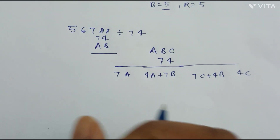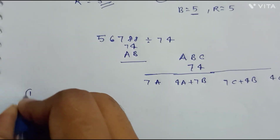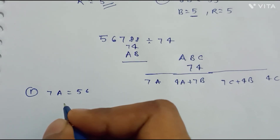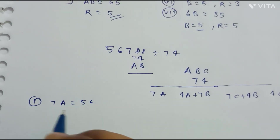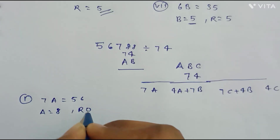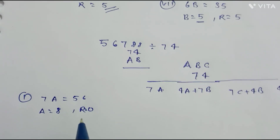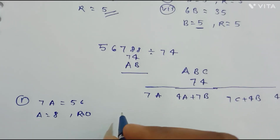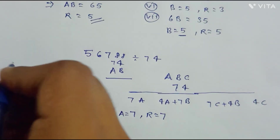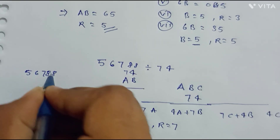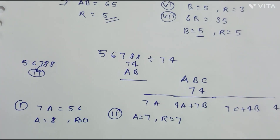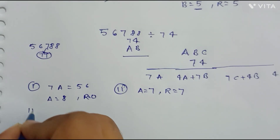Now we equate this with the given number 56788 and find the values of a, b, and c. Our first step is to write 7a equals 56. As we saw in the last example, when the remainder comes to 0, we get a negative number in the next step, so be careful. If we take a equals 8, the remainder comes out to be 0, so we must go back and take a equals 7. Then the remainder comes out to be 7. Since the given number is 56788, this remainder 7 comes below the next digit 7, making the number 77.